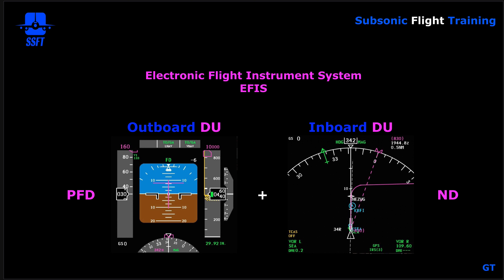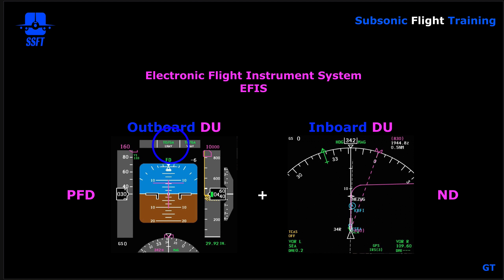The PFD combines many traditional flight instruments into one. You can see we have airspeed information, attitude information, flight director information, heading information, flight mode annunciation information, autopilot flight director engage status information, radio altitude information, altitude information, and vertical speed information.